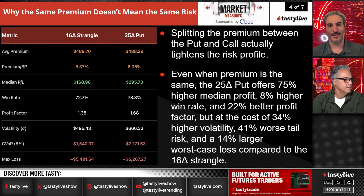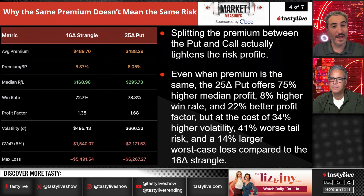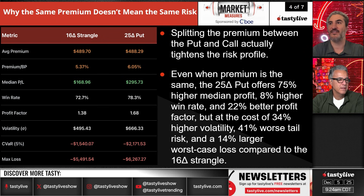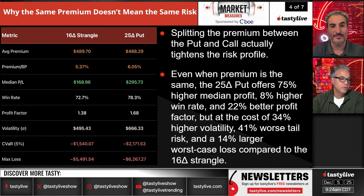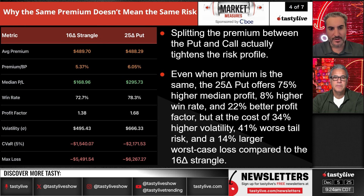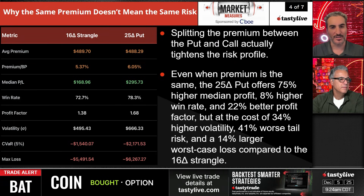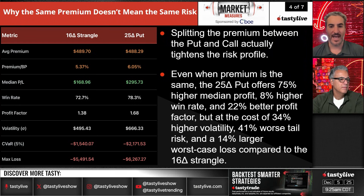It's a double-edged sword. You're going to make more on moves up, and it has been an upside market, but when you have those moves to the downside you're also going to have bigger tail risk. That just comes with being directional versus non-directional. Ultimately, what this tells you is that you need to diversify — not only strategy but directional assumptions across your portfolio. You don't want your whole portfolio to just be short puts; you want to have that two-sided trade and limit some of that tail risk.